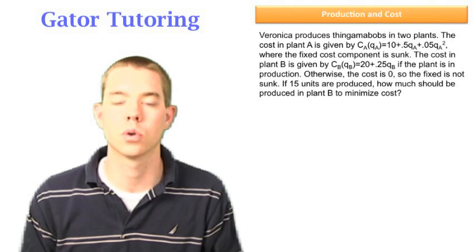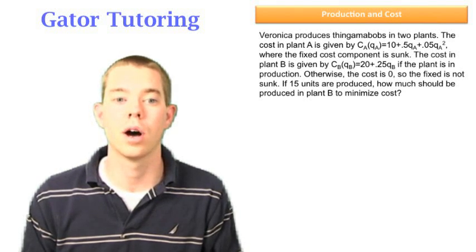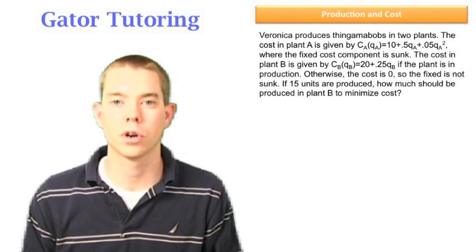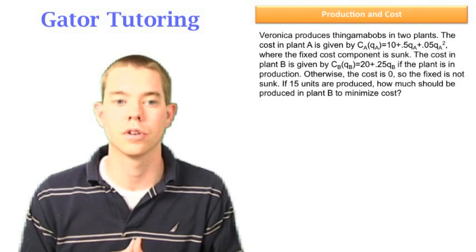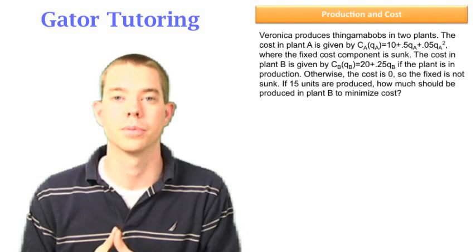The cost in plant B is given by CB(QB) = 20 + 0.25QB if the plant is in production, otherwise the cost is zero. In other words, that fixed cost of $20 is not sunk, so we can avoid paying that $20 if we don't bring plant B into production.